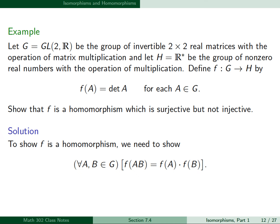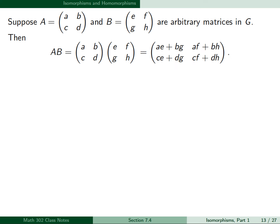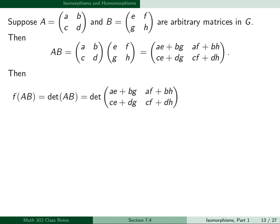To show f is a homomorphism, we need to show that for all matrices A and B in G, f(AB) = f(A) · f(B). Suppose A = [a b; c d] and B = [e f; g h] are arbitrary matrices in G. Then AB is the product of those two matrices, and f(AB) = det(AB), which is the determinant of that product matrix.